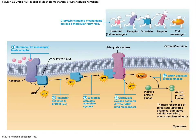In the endocrine system, we have two different ways that hormones can get the job done, and it depends on what kind of hormone it is — whether it's a water-soluble hormone, basically an amino acid-based hormone, or whether it's a steroid, a fat-based hormone.